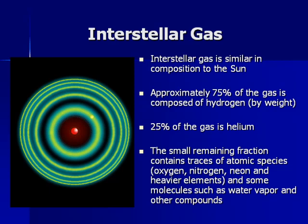Approximately 75% of the gas is hydrogen by weight and 25% is helium, with a trace amount of oxygen, nitrogen, and neon. It does include some molecules such as water vapor, and even toxic gases like carbon monoxide and cyanogen.